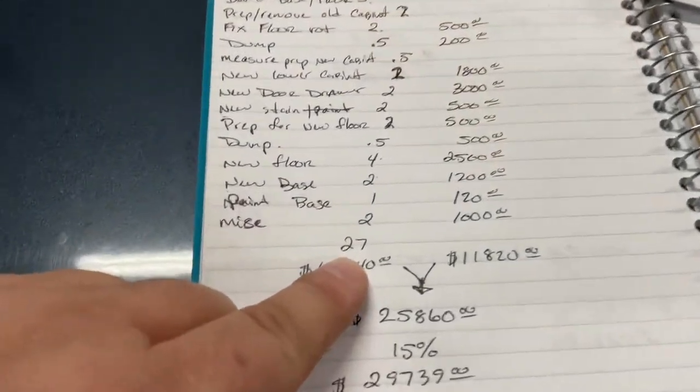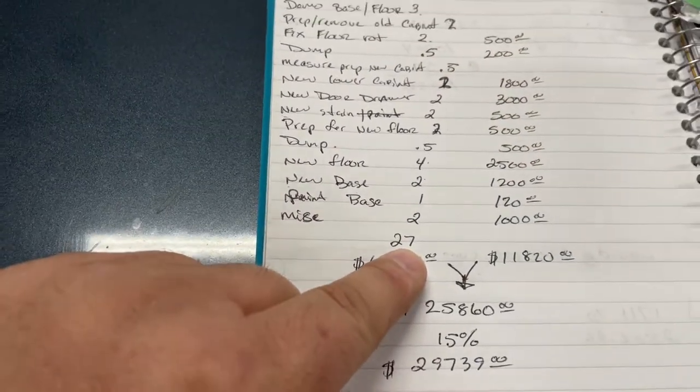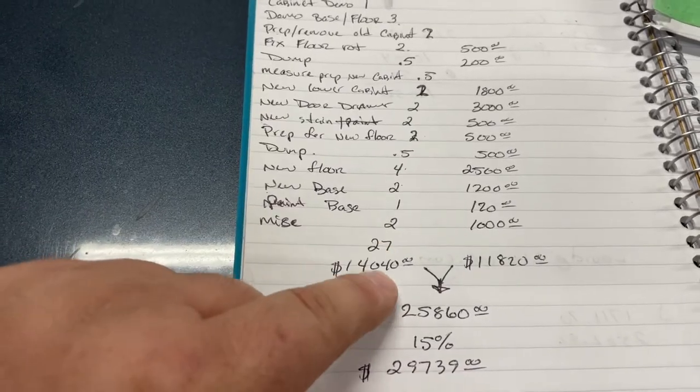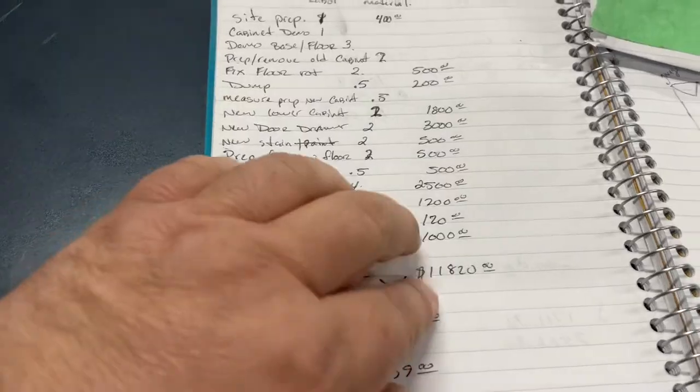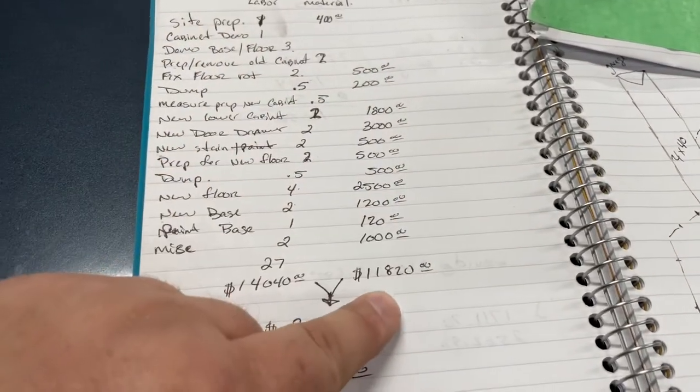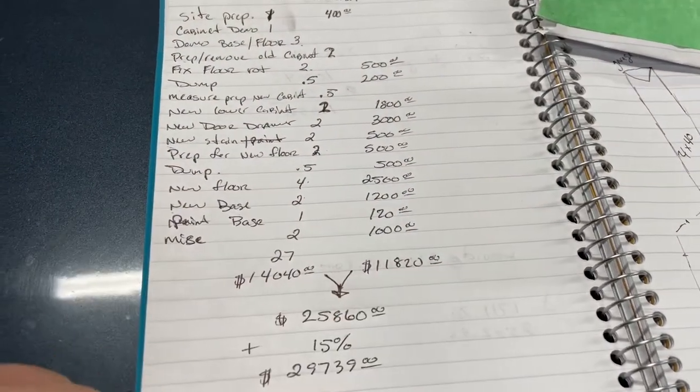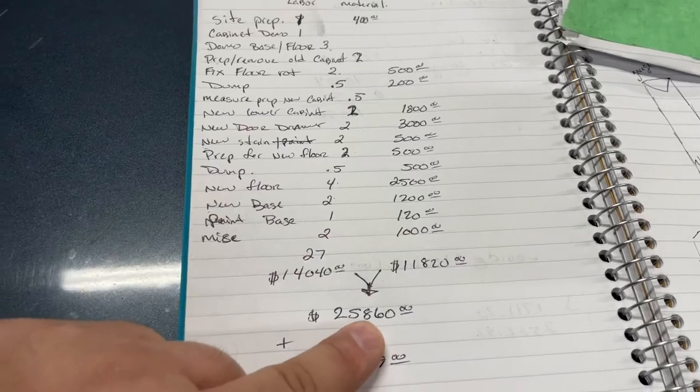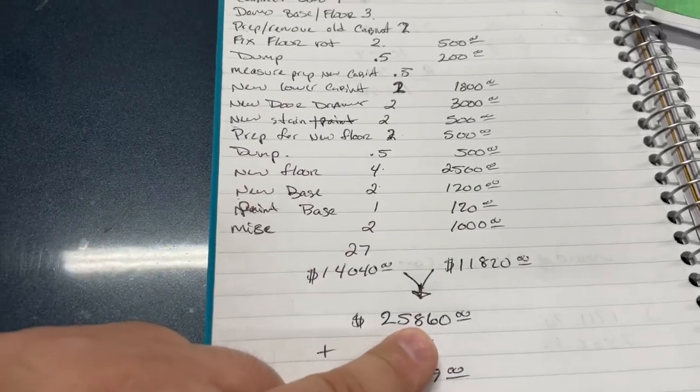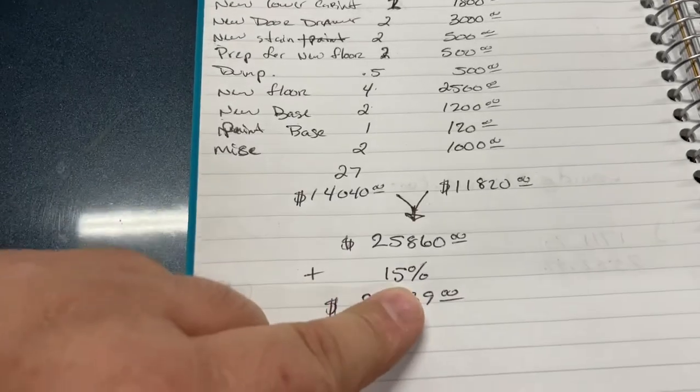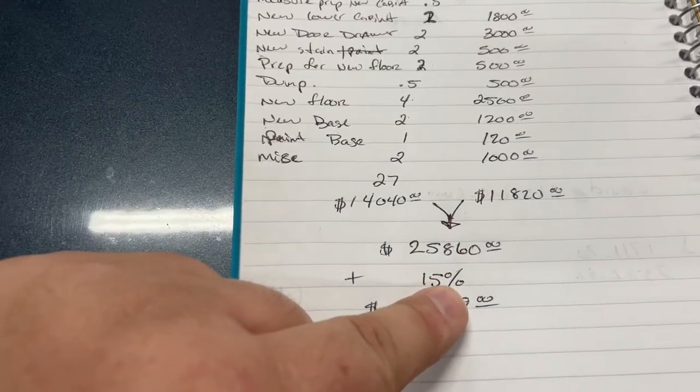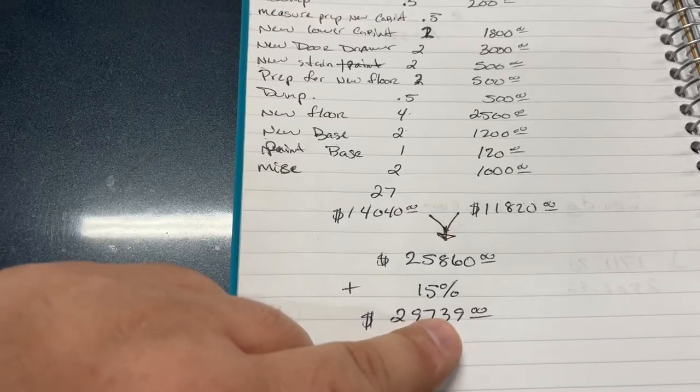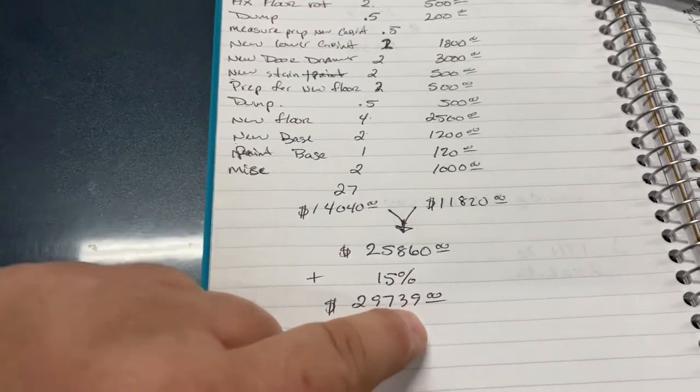All right, let's turn this thing back around. So we have 27 man days, eight hours a day, $65 an hour. We're at $14,040. And then all of our material costs come up to $11,820. So our grand total of hard cost is $25,860. Add 15% for your profit margin, your profit and overhead. And you come up with $29,790.